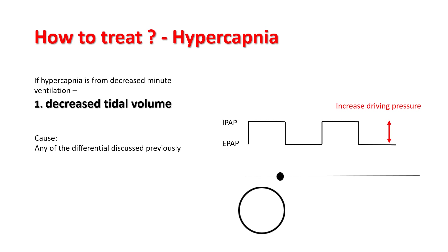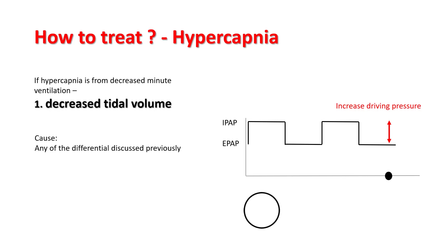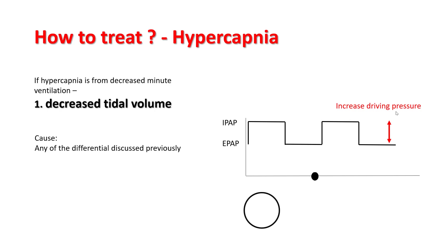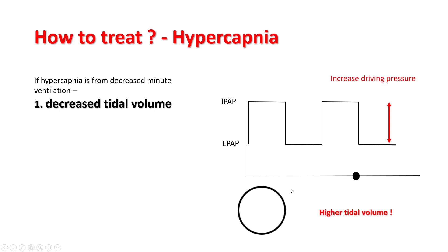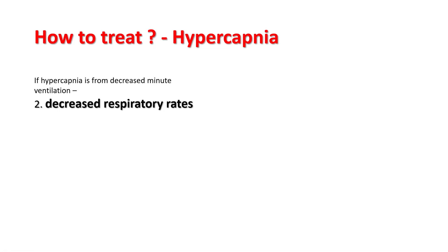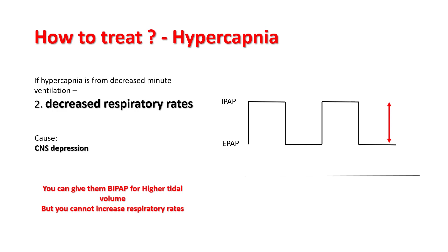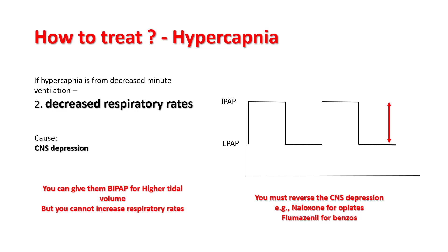To treat hypercapnia from decreased tidal volume — which can come from any of the differentials discussed — the easiest way to increase tidal volume is to increase driving pressure, using bi-level or BiPAP. As you increase the driving pressure by increasing the difference between inspiratory and expiratory pressures, you give the patient a higher tidal volume, increasing minute ventilation and thus reducing hypercapnia. Hypercapnia from decreased respiratory rates is usually from CNS depression. You can give BiPAP for higher tidal volume, but do not expect respiratory rates to rise significantly. You can try to reverse CNS depression using naloxone for opiates and flumazenil for benzodiazepines.